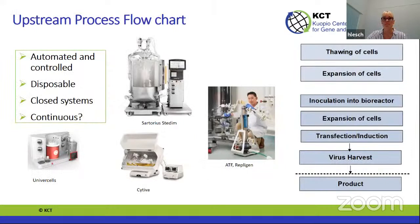When focusing more towards clinical trials, manufacturing should be controlled, automated, and production done in closed systems. Product contact material is recommended to be disposable. The future vision is that manufacturing is going towards a continuous process, but more development work is required before it becomes standard in retroviral or lentiviral manufacturing.